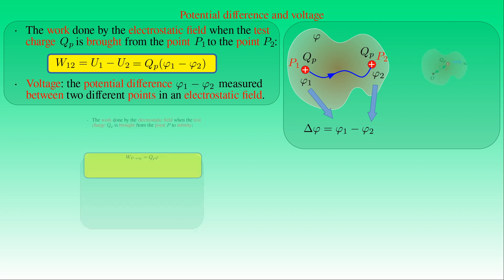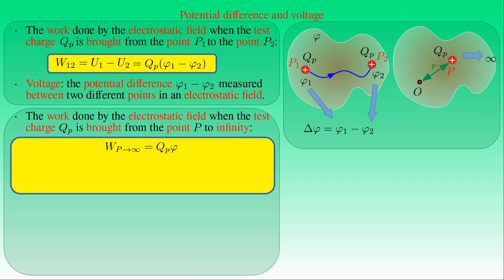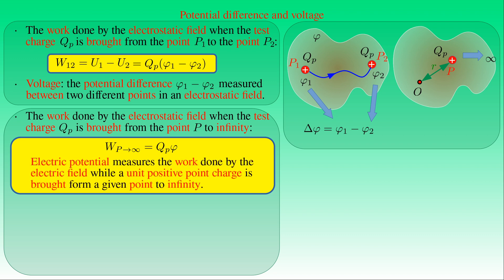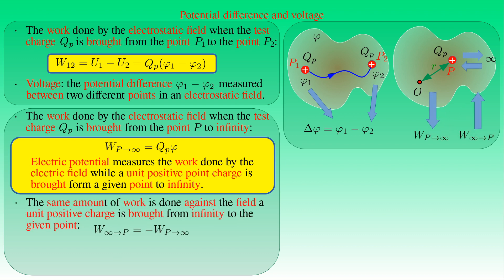If test charge QP is brought from point P (where potential is φ) to infinity, the work W done by the electric field equals QP × φ. Therefore, the electrostatic potential φ at a given point measures the work done by the electric field while a unit positive point charge is brought from that point to infinity. Equivalently, the same amount of work is done against the electric field when a unit positive charge is brought from infinity to that point.